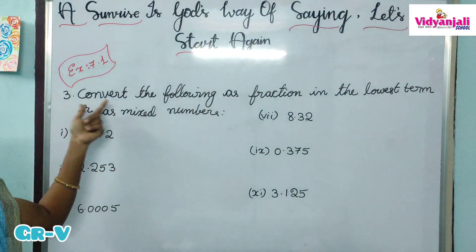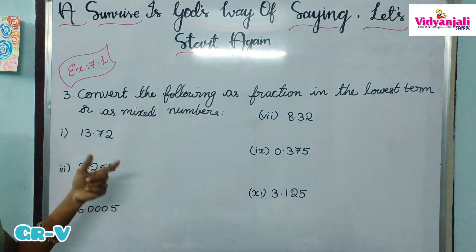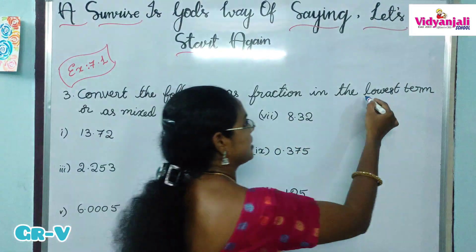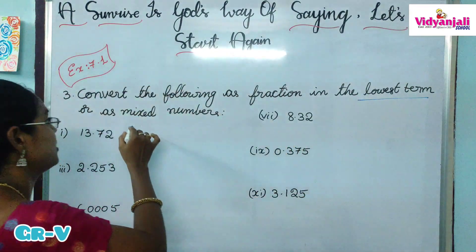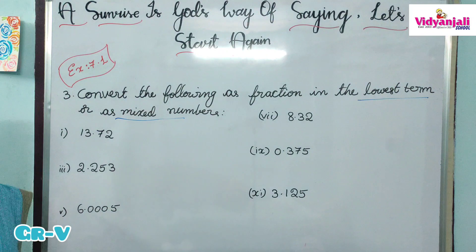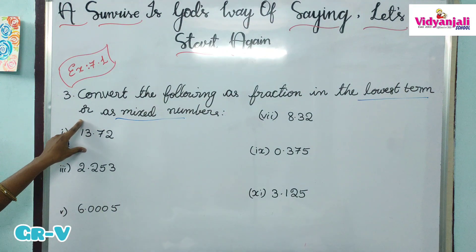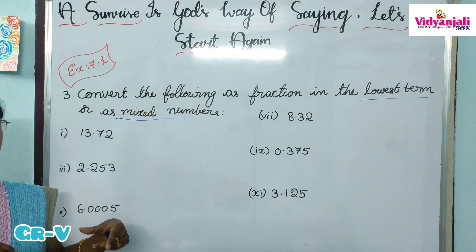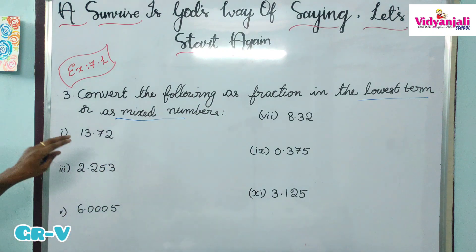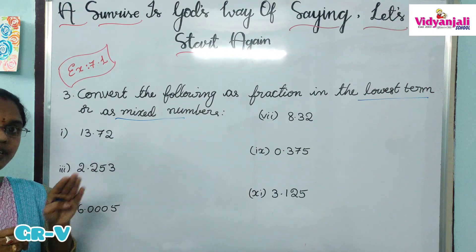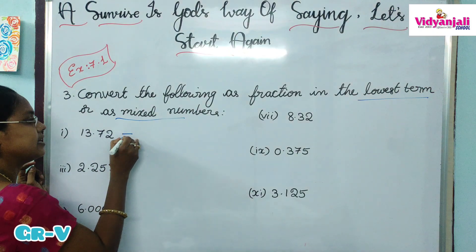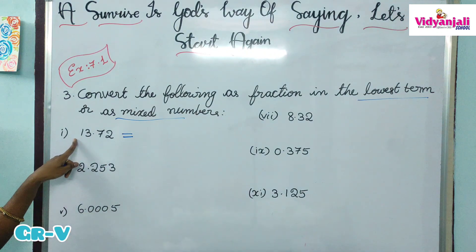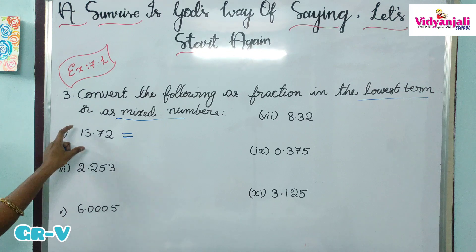Third question children: convert the following as a fraction in lowest terms or as mixed numbers. There are two methods to convert a decimal number to a fraction. I will explain both methods and then we can follow whichever is comfortable. The first question is 13.72.